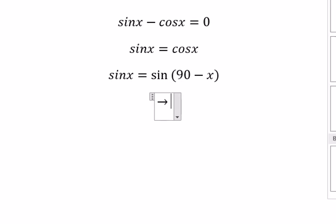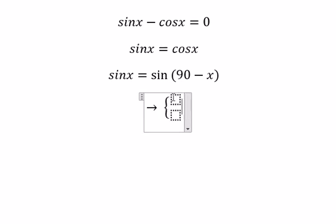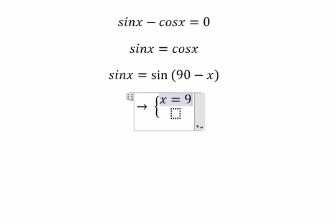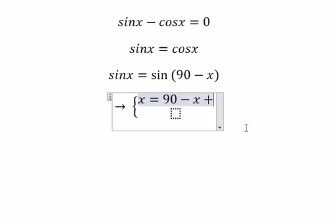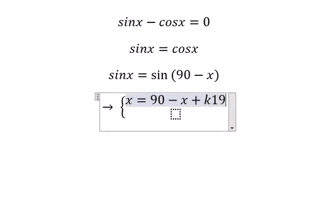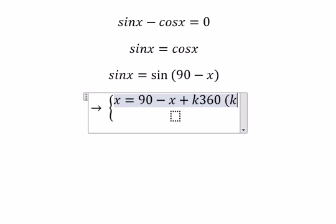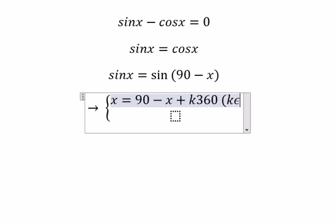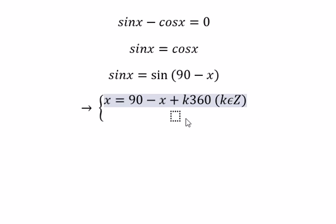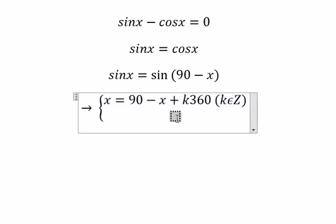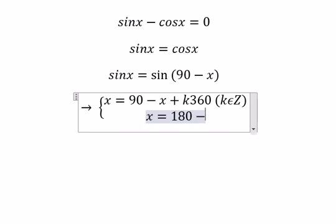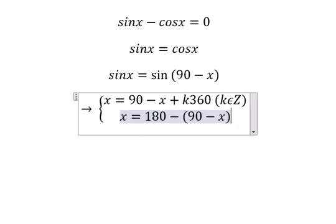This gives us two equations. The first one: s equals 90 minus s plus k360, where k belongs to integers. The second one should be s equals 180 minus 90 minus s plus k360.